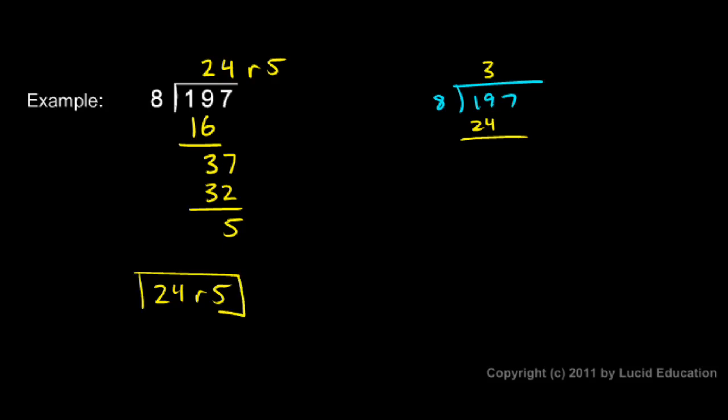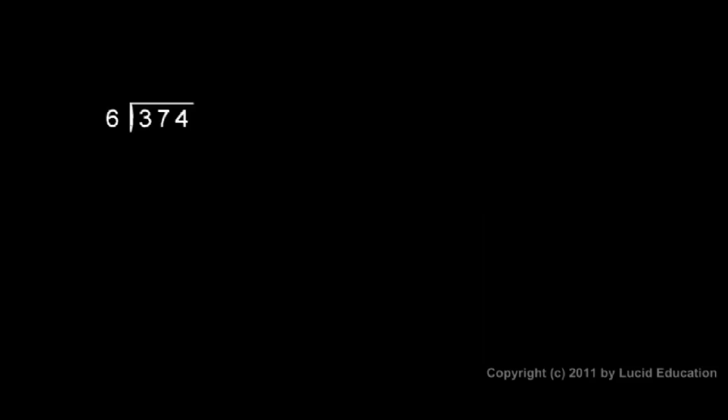Now we got an answer of 24 remainder 5. We can check our answer. We should be able to multiply 24 by 8 and then add in the remainder, and the result should be our original number 197. So let's do 24 times 8. 8 times 4 is 32, 8 times 2 is 16, and we add that 3, and that gives us 19. That's 192. And then if we add the 5, you can see that gives us 197, so the check works. That verifies our answer is correct.